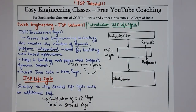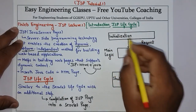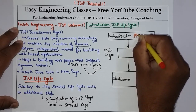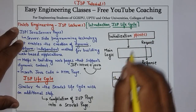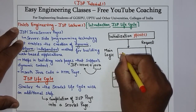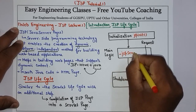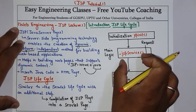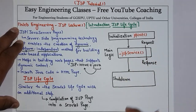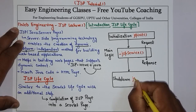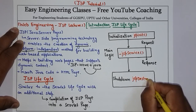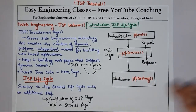Now there are different methods present in this life cycle. In the initialization phase, the method that is called is jspInit. For the main logic, the method is _jspService. In the jspService method, the request is processed and the response is generated. To destroy the JSP, the method used is jspDestroy. These are the three main methods you need to remember when attempting a question on the JSP life cycle.